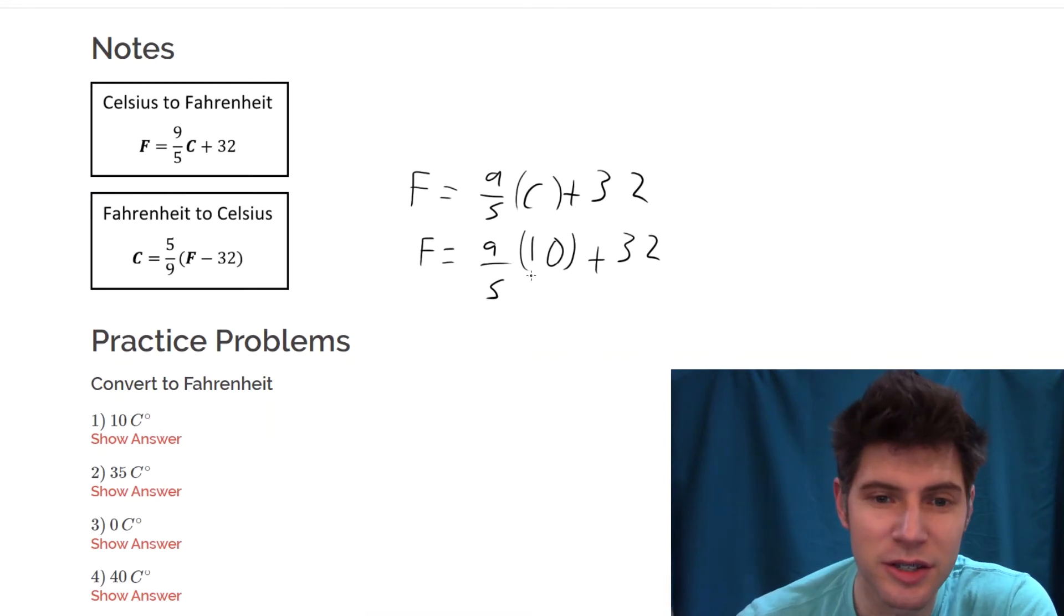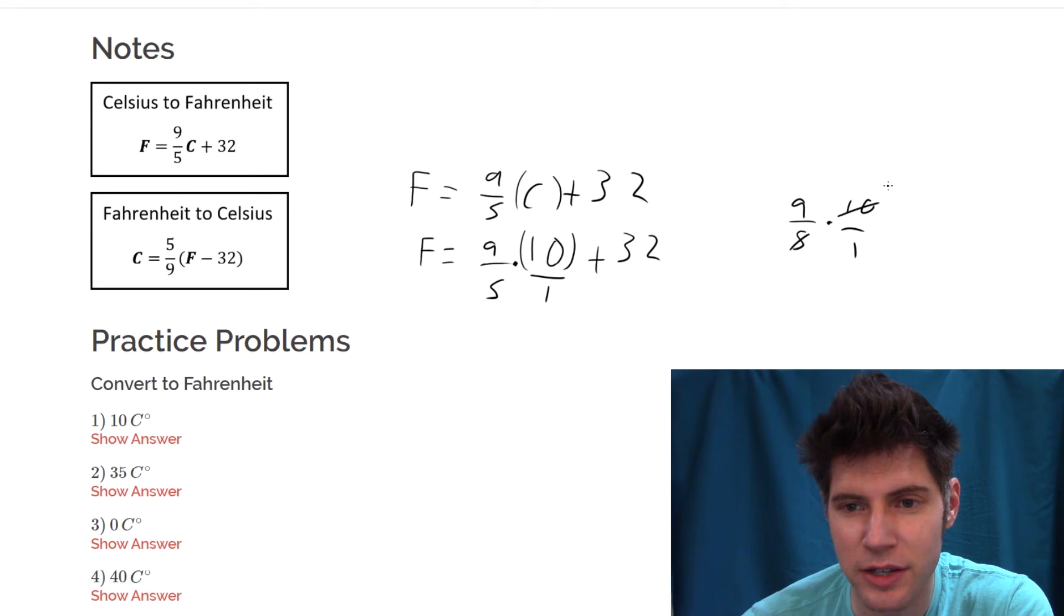You can think of this 10 as 10 over one. So it's like we're multiplying fractions: nine-fifths times 10 over one. We can reduce the five and the 10 both by a factor of five.